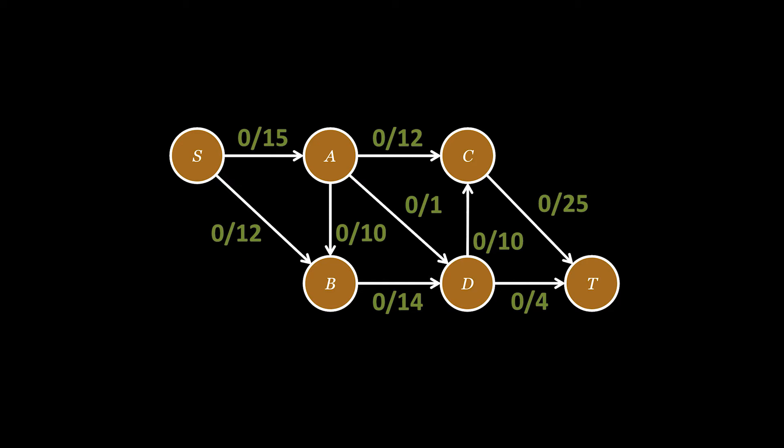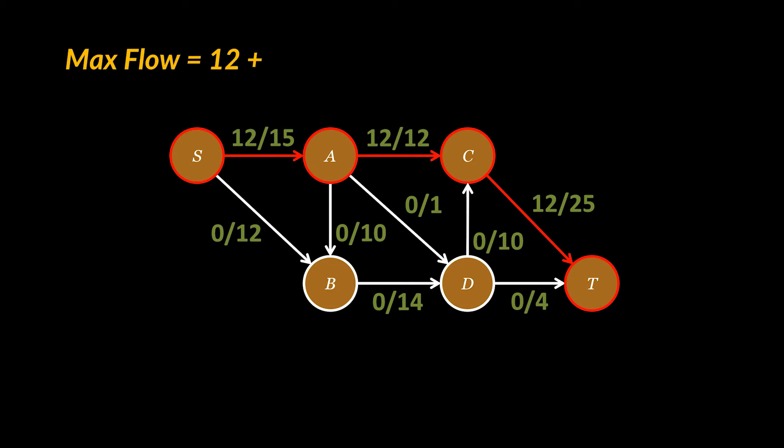Before I tell you what the actual algorithm does, let's try to intuitively find the max flow of this graph or water network. Take this path from S to T. The maximum flow we can throughput using it is 12 units. Now take this second path here. The maximum amount of water that can flow is 4 units only.